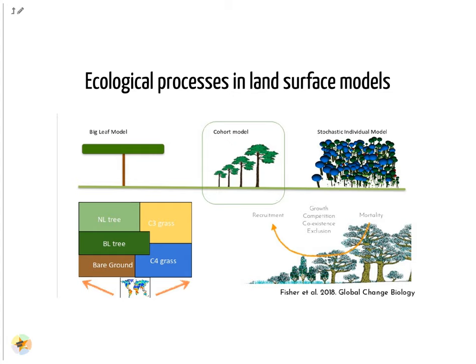On this slide, we show three different ways to represent ecological processes in land surface models. On the left, we have the big leaf model, which is the kind of default land surface model used in climate models. Big leaf models are oversimplified and the different types of vegetation do not compete with each other for light or resources. The forest tree community has typically used a complete opposite approach with stochastic individual models, where you model individual trees with specific location and space. Stochastic aspect comes from the fact that the location of the trees are random and where the plants die is semi-random. These models are great but very expensive. So the cohort model is a compromise between the two approaches.